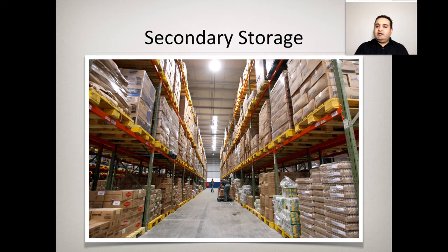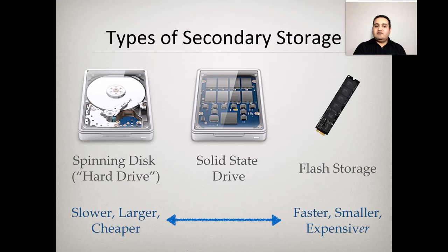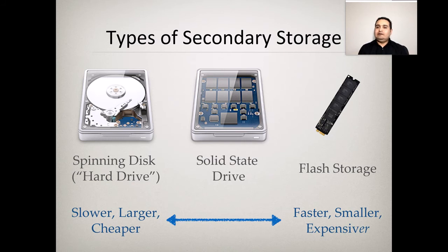Secondary storage is like a warehouse for non-perishable items. The most common secondary storage is the hard drive or disk drive. There are different types. The optical spinning disk has a pin that reads a spinning disk — the friction between the pin and disk creates heat. That is why older computers that use optical spinning hard drives make noise, and the fan runs to keep that heat down.